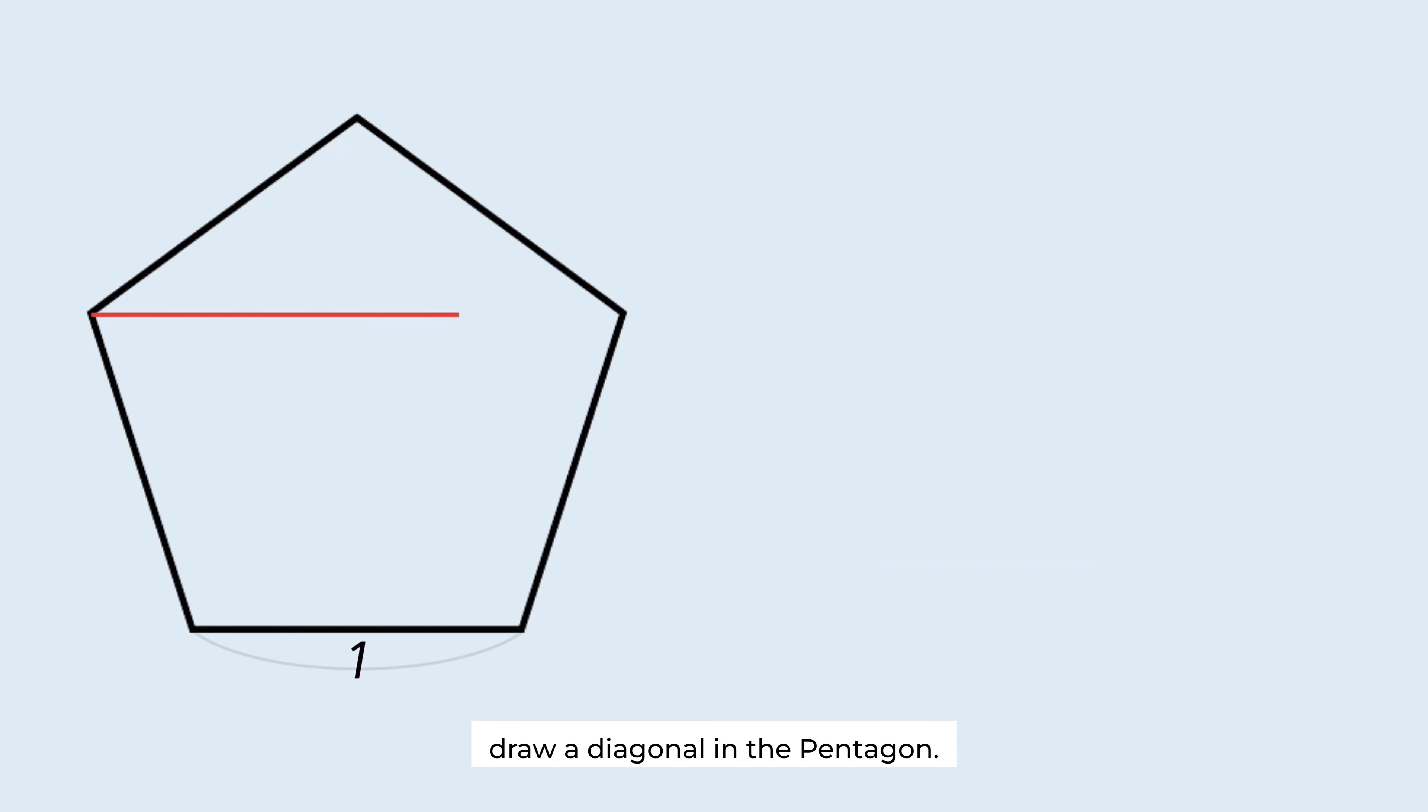Draw a diagonal in the pentagon. The length is D. The pentagon is divided into a triangle and a quadrilateral. If we know the value of D, we can easily calculate the area of these two shapes using specific formulas.